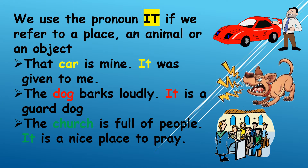We use the pronoun it if we refer to a place, an animal, or an object. Like in the following sentences: That car is mine. It was given to me. The dog barks loudly. It is a guard dog. The church is full of people. It is a nice place to pray.